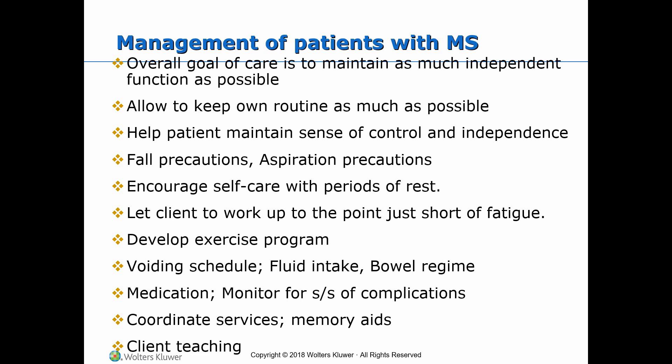Consider fall precautions while doing so. Assist the client with ADLs on an as-needed basis. Provide adaptive utensils or other assistive devices as needed. Initially, work with the client on a voiding schedule. Teach the client that as incontinence worsens, females may need to learn clean self-catheterization. At home, they can reuse the catheter by disinfecting it with soap and water and drying it. Males may need a condom catheter. Maintain fluid intake of at least 2000 ml per day, high fiber foods, and a bowel regimen for constipation to promote bowel and bladder function and prevent impaction and urinary tract infection.